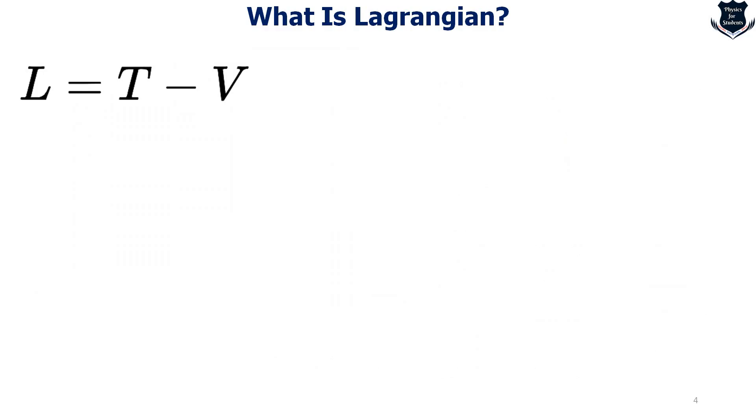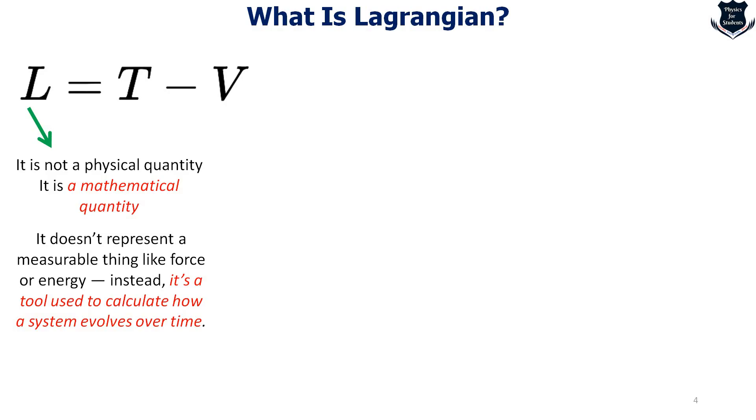There is an important point to note that this L is basically not a physical quantity. You cannot say that L is something which you can touch and feel or do something with. This is basically a purely mathematical quantity. It does not represent a measurable thing, but it is very important because it is a tool which generalizes and makes complex concepts much easier. It is a tool to calculate how a system evolves over time.